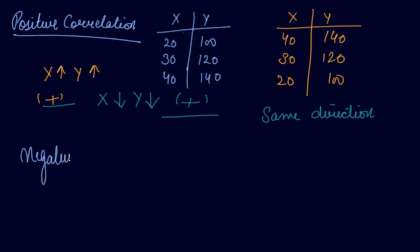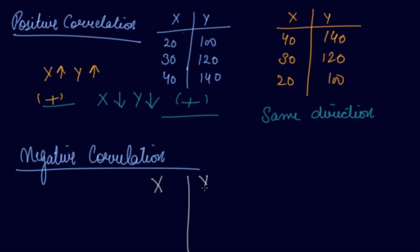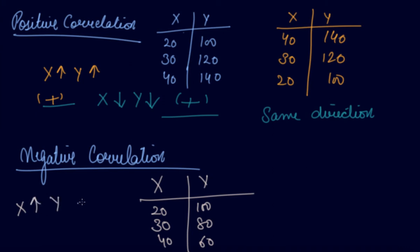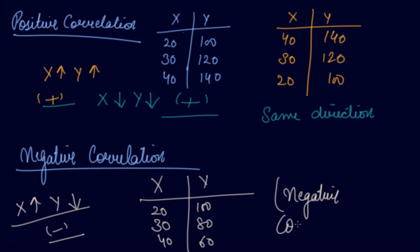Now, negative correlation — if one variable and the other variable do not change in the same direction, then it is known as negative correlation. Suppose x is increasing and y is decreasing — there is a negative relationship between both. This is known as negative correlation, such as price and demand.